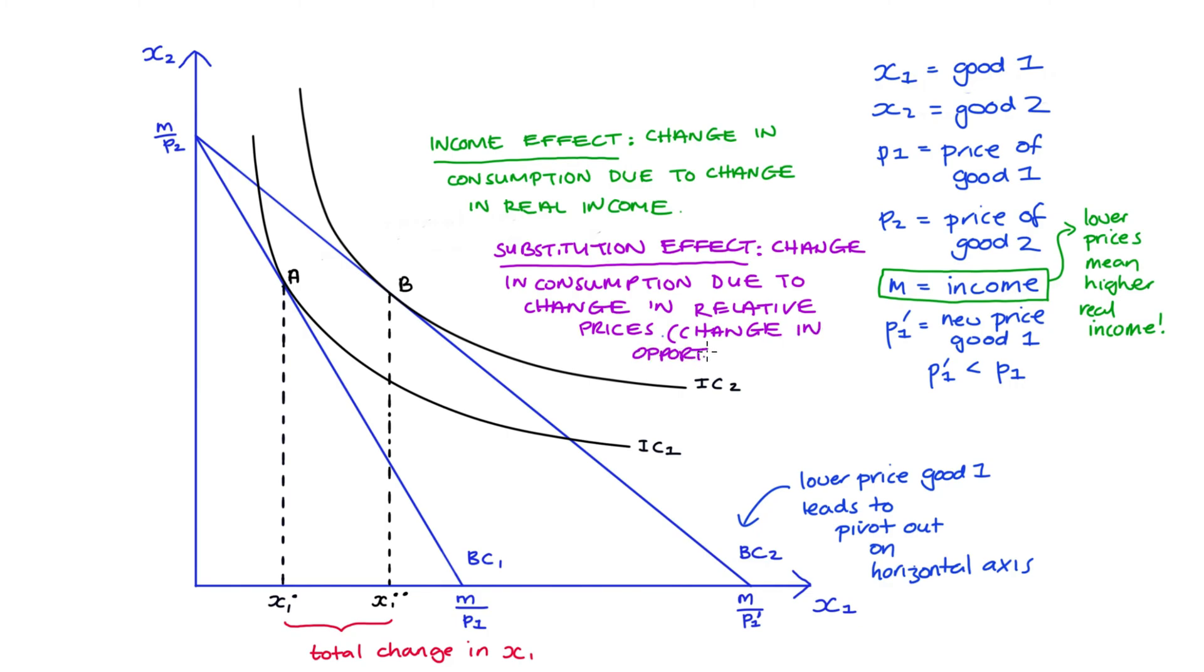Now it's worth noting that sometimes we describe these changes in terms of changes in opportunity cost. In our case the opportunity cost of good one has decreased. The way to think about this is that if we're already exhausting our income at any point and we buy one more of good one now that the price has dropped, we have to give up less of good two than we did before because good one is cheaper. A nice connection to make here is that this decrease in opportunity cost is evidenced by the flatter budget constraint.